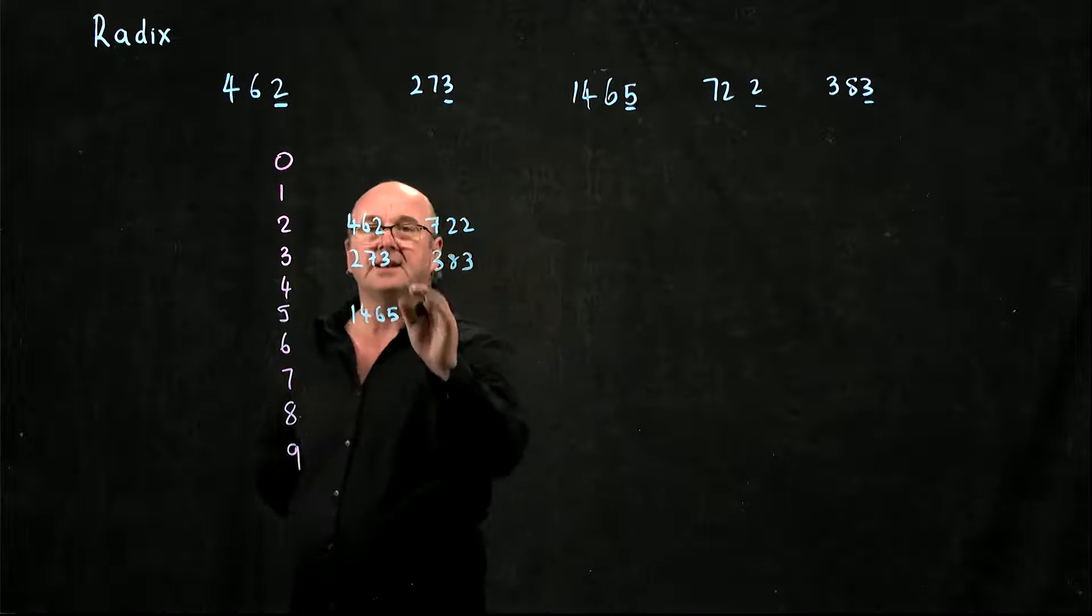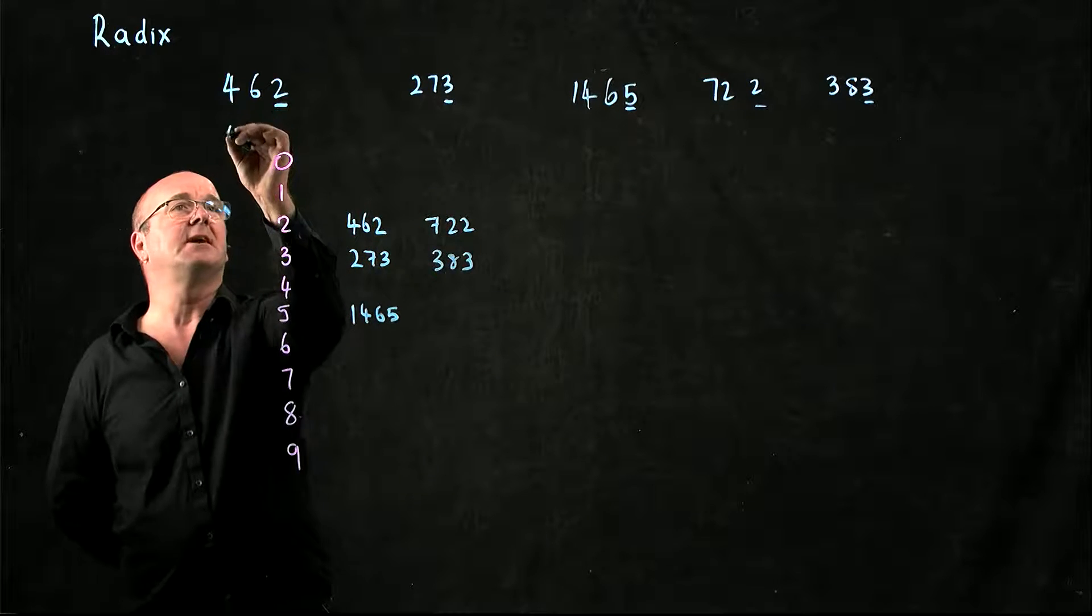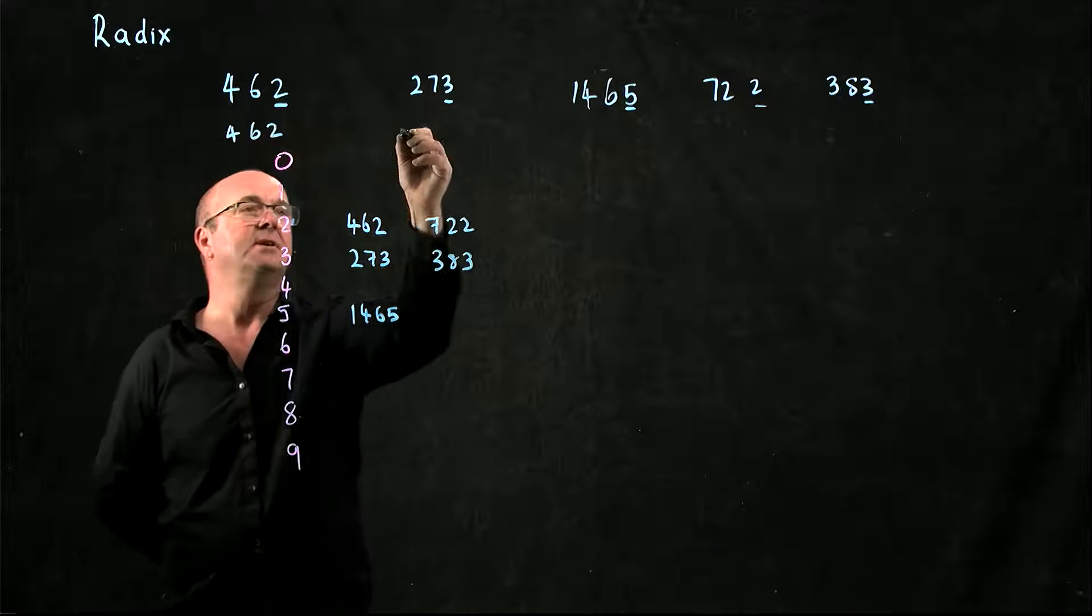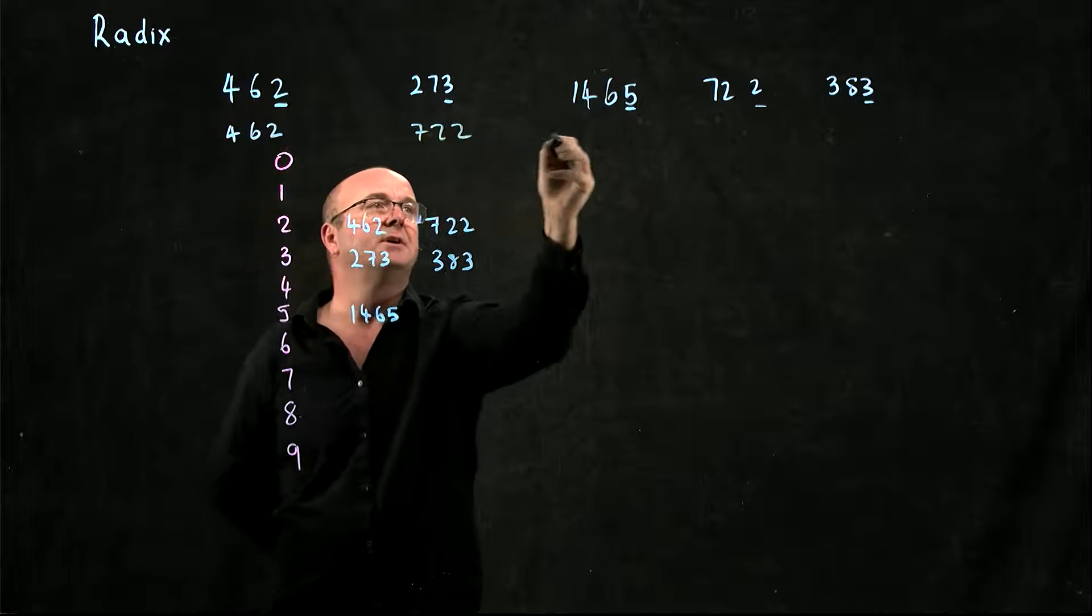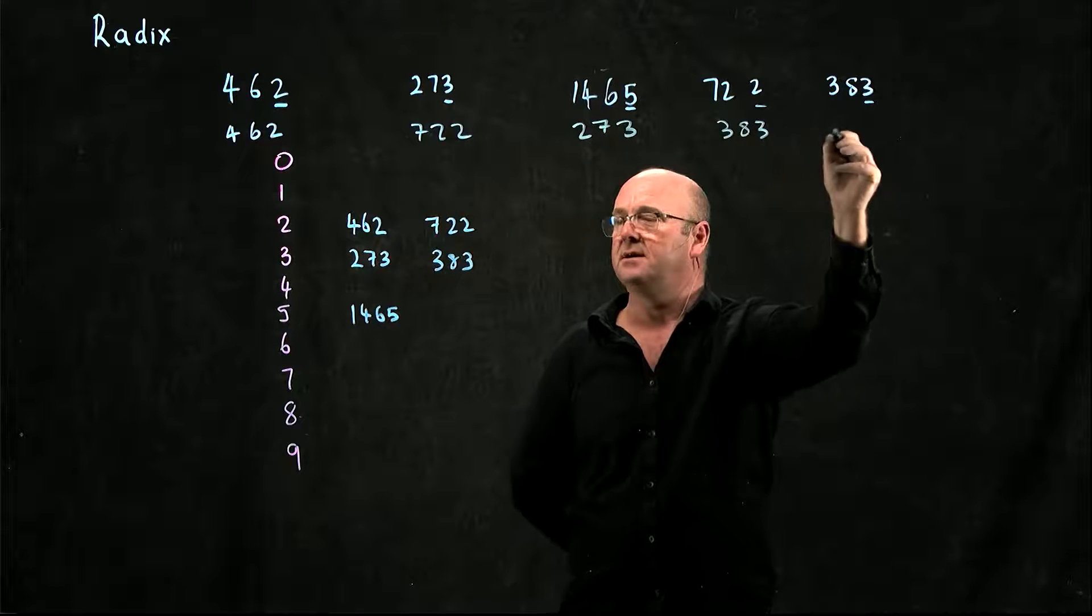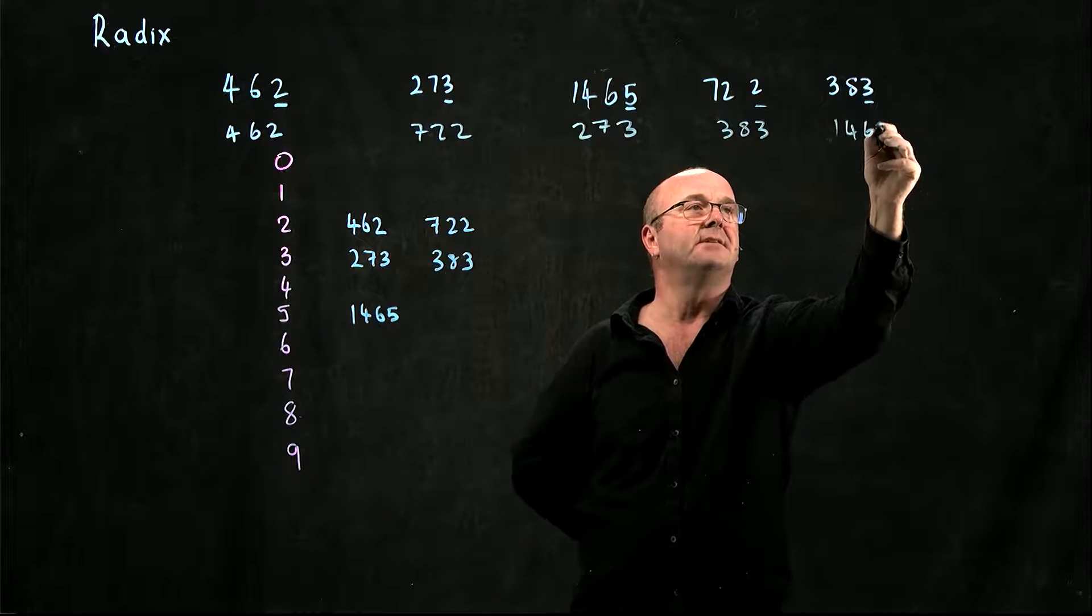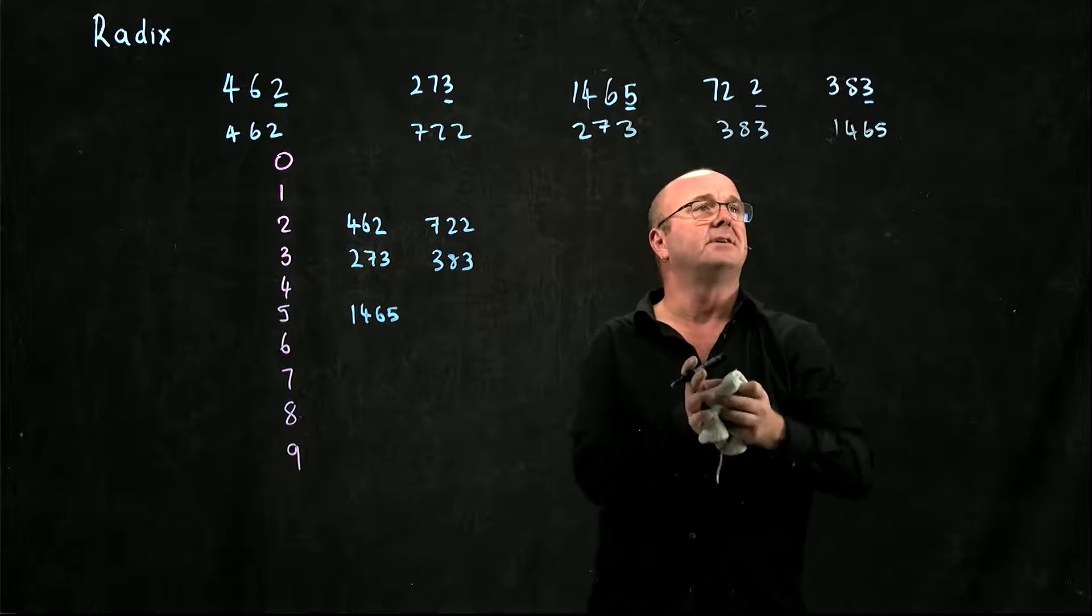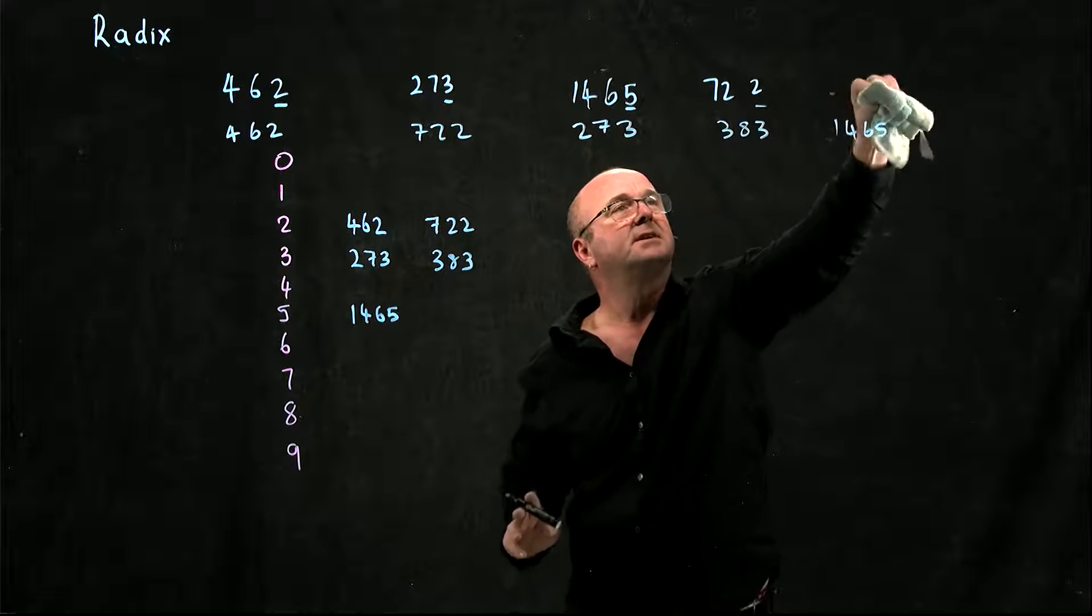Now I take that list and I rewrite it. So now my list has become 462, 722, 273, 383, 1465. And I can get rid of the original version of my list.